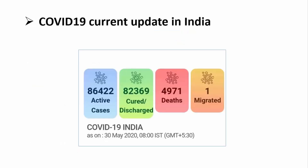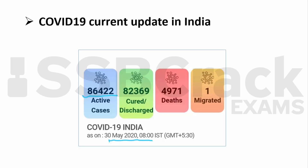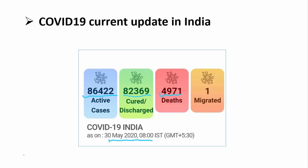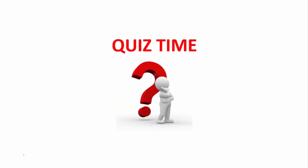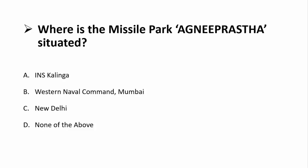For the COVID-19 update in India as of 30th May at 8 a.m.: the total number of active cases stands at 86,422. The number of cured cases has breached the 80,000 mark, reaching 82,369 — which is very good news. Unfortunately, the death toll has also risen to 4,971.